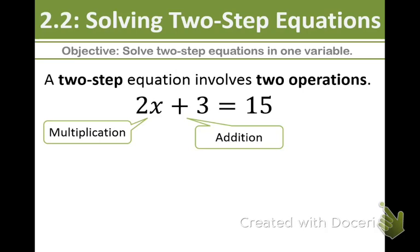A two-step equation uses two operations. There's an example right below: 2x plus 3 equals 15. As you can see, there is multiplication going on right here and addition going on right here. So there's two operations involved.